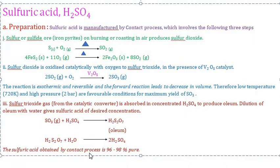Fuming sulfuric acid is then diluted to obtain the desired concentration of sulfuric acid. The concentration of sulfuric acid obtained by the contact process is 96–98%, making this method the most widely used industrially.